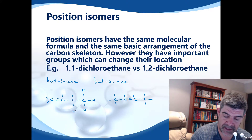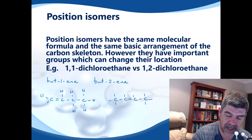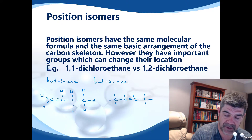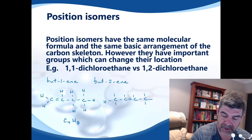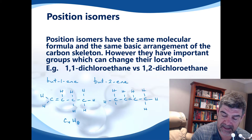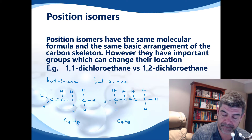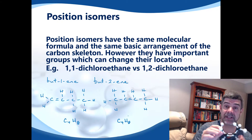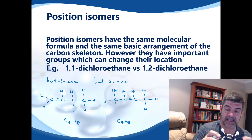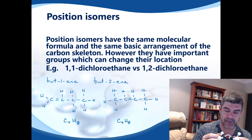Once again, we have to check our rules about isomerism, which is molecular formula C4H8. For the first one, which is but-1-ene, and for the second one, which is but-2-ene, I have exactly the same molecular formula, which is C4H8. So they fulfill the criteria of isomers — they have exactly the same molecular formula but different structural formulas.